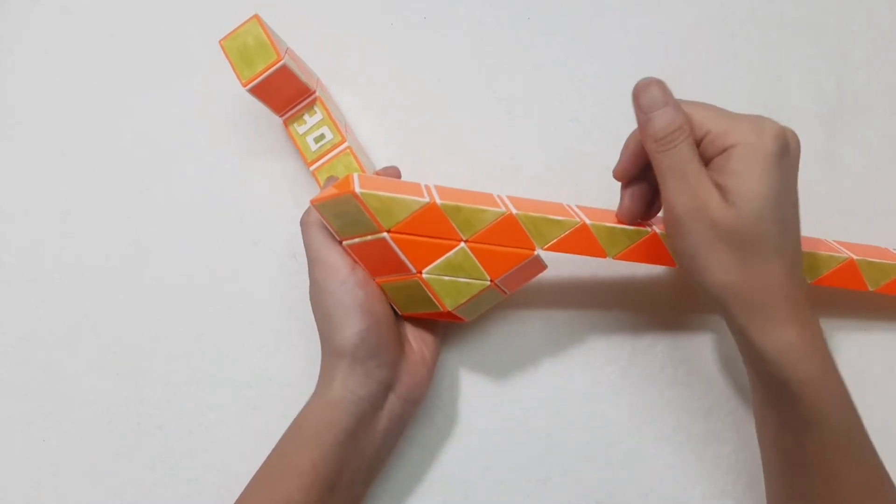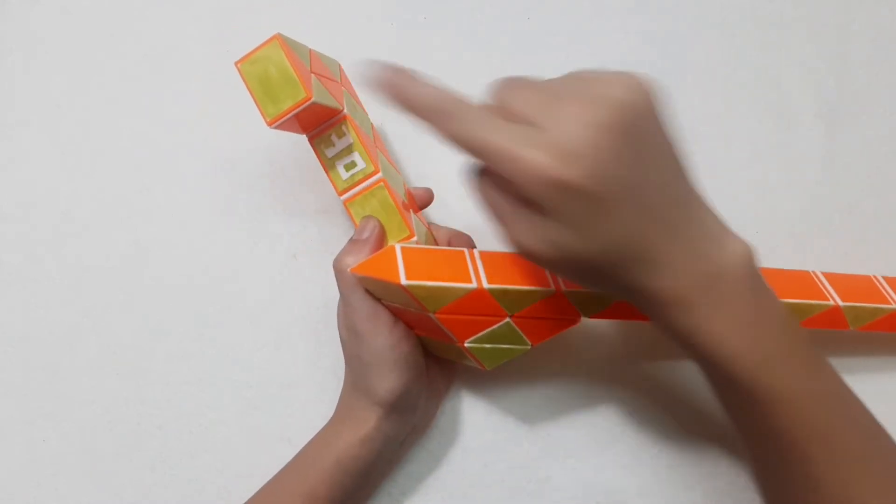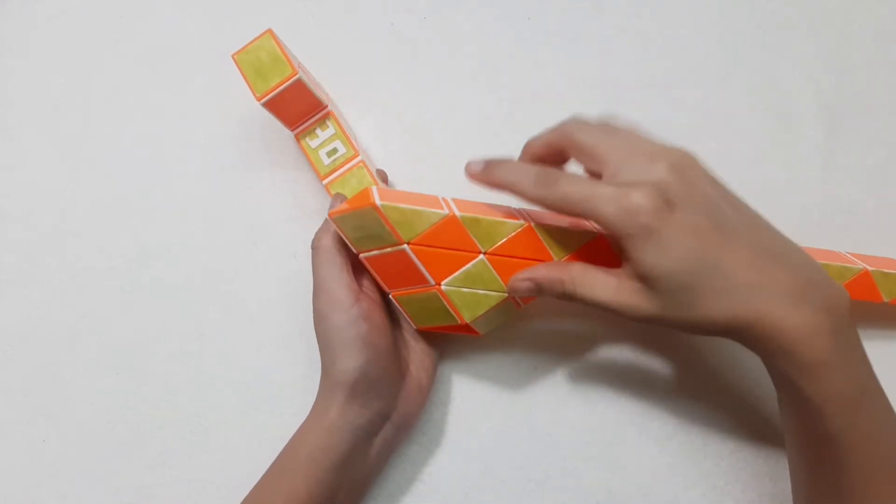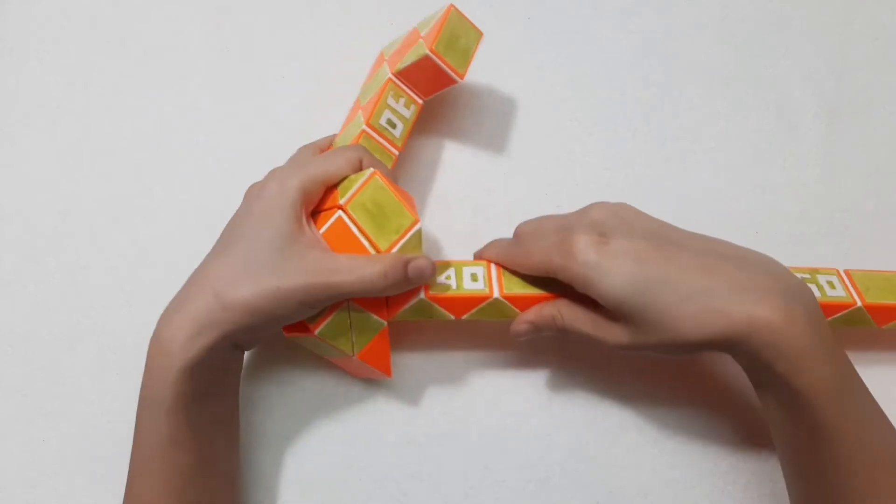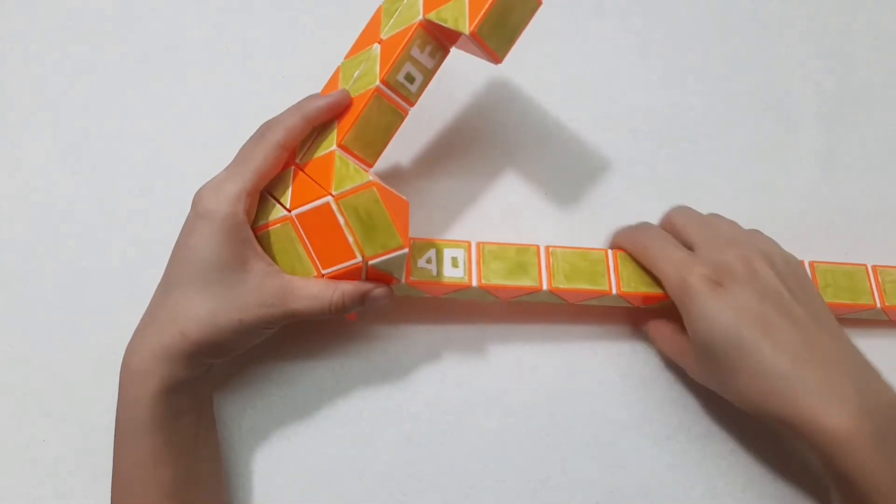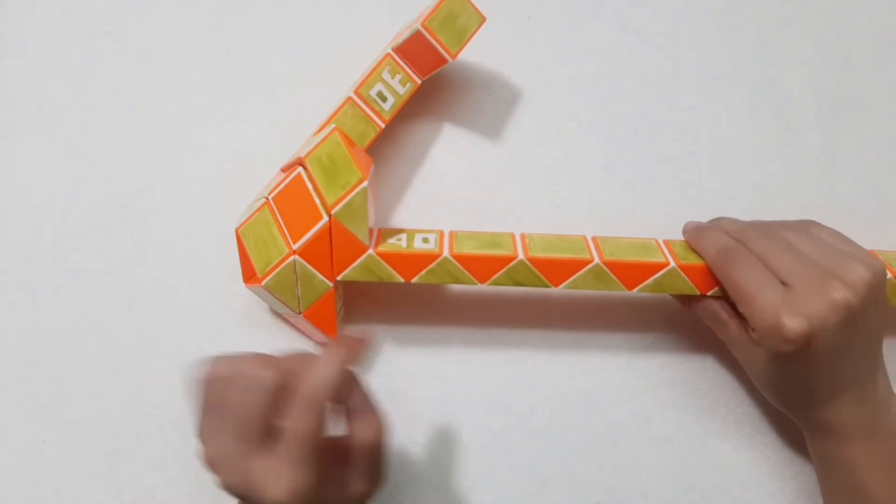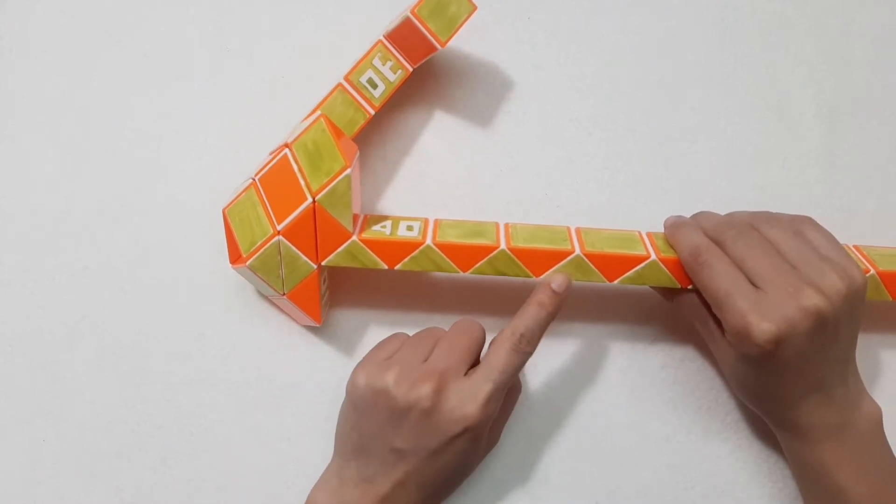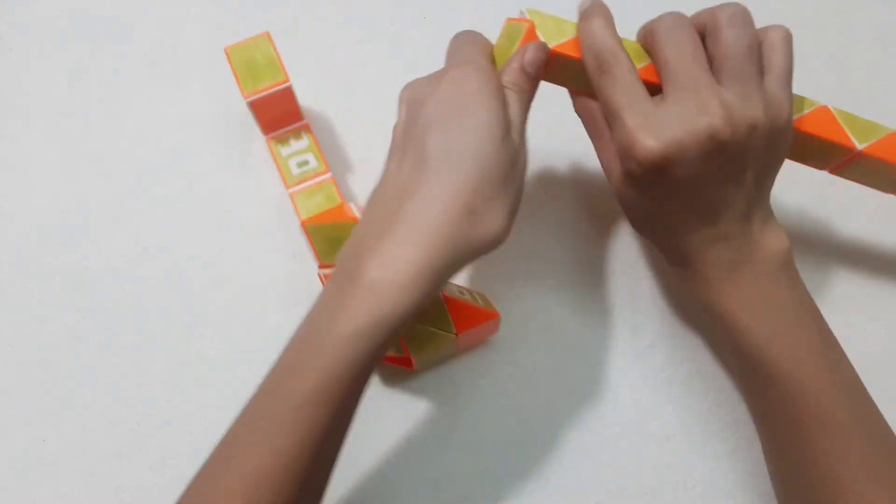Now we do the same way to make this one. 1, 2, 3, go up. 1, 2, 3, go up. 1, 2, 3, go up. 1, 2, 3, 4, 5, 6, 7. Go to the right side.